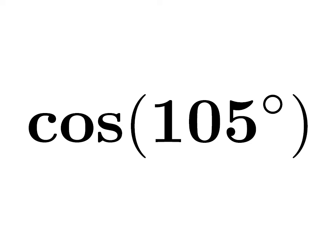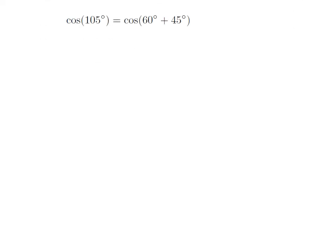In this video, we are going to find the value of cosine of 105 degrees. 105 degrees is equal to 60 degrees plus 45 degrees. So cosine of 105 degrees is equal to cosine of 60 degrees plus 45 degrees.